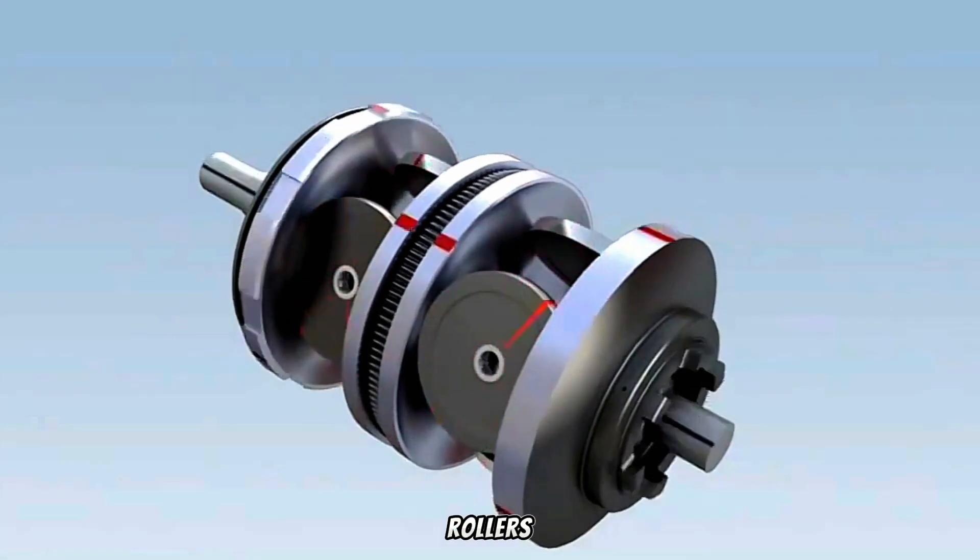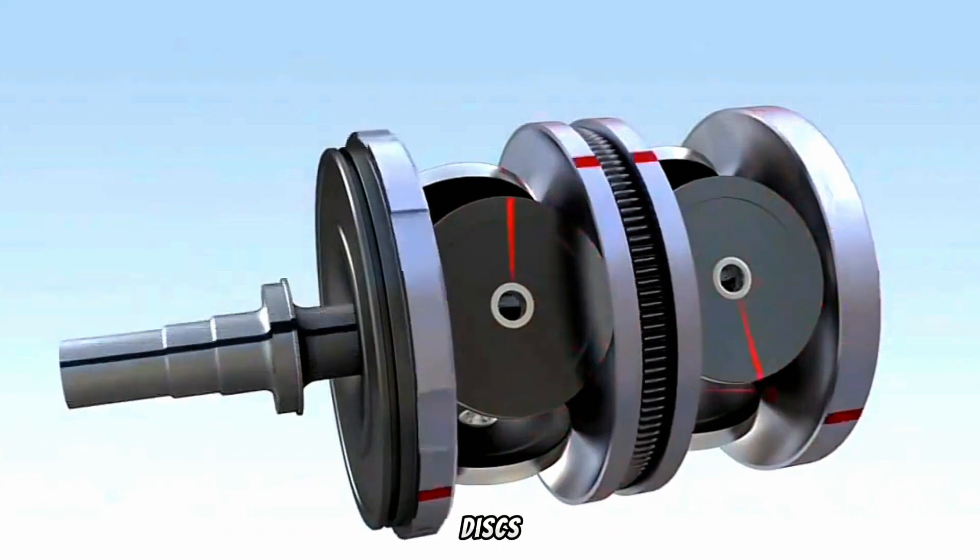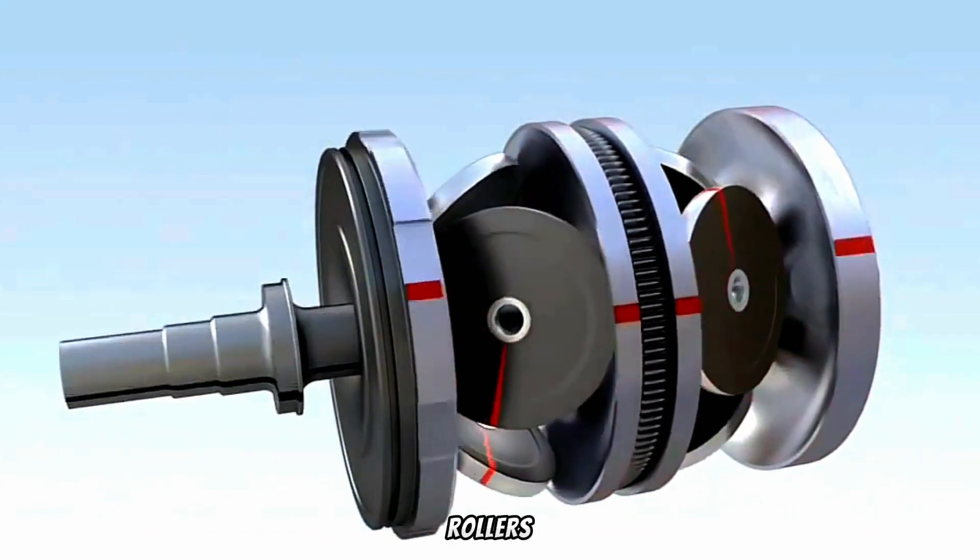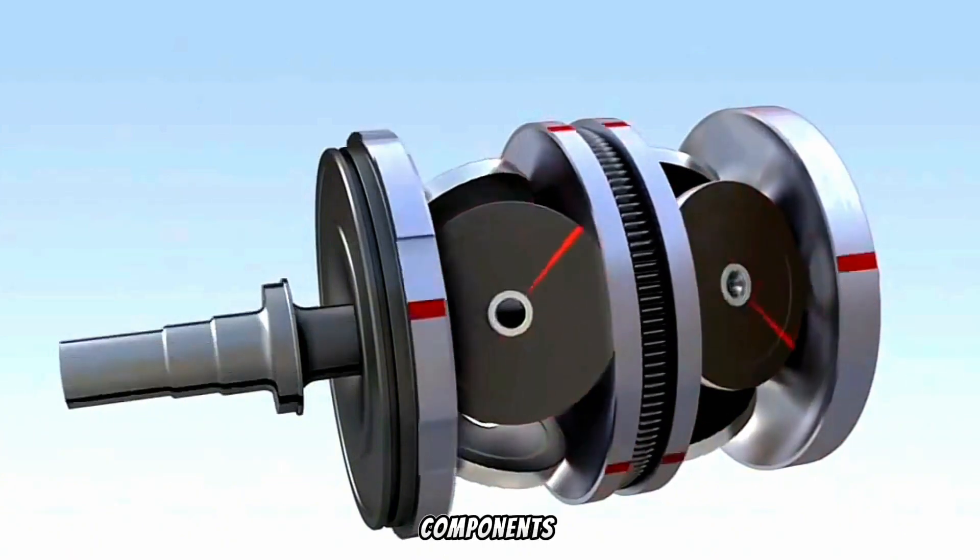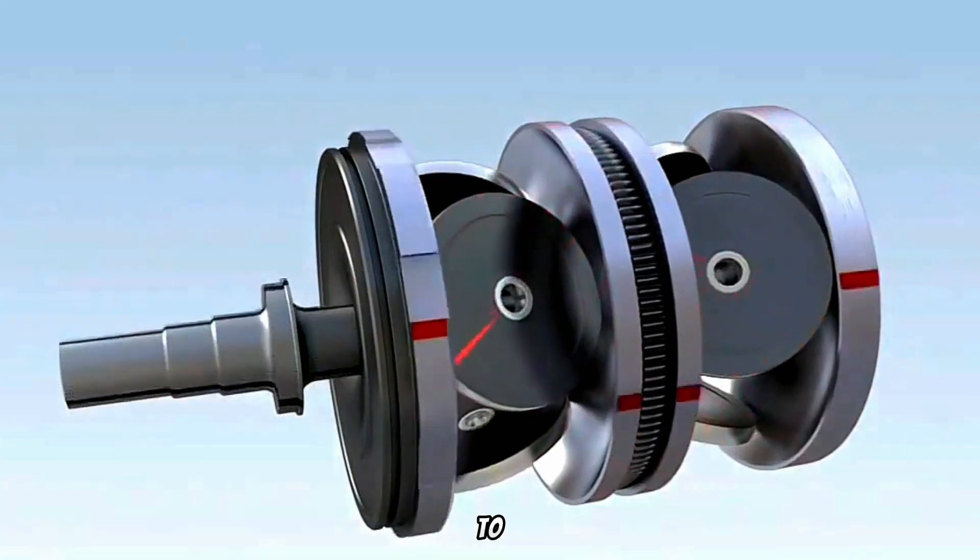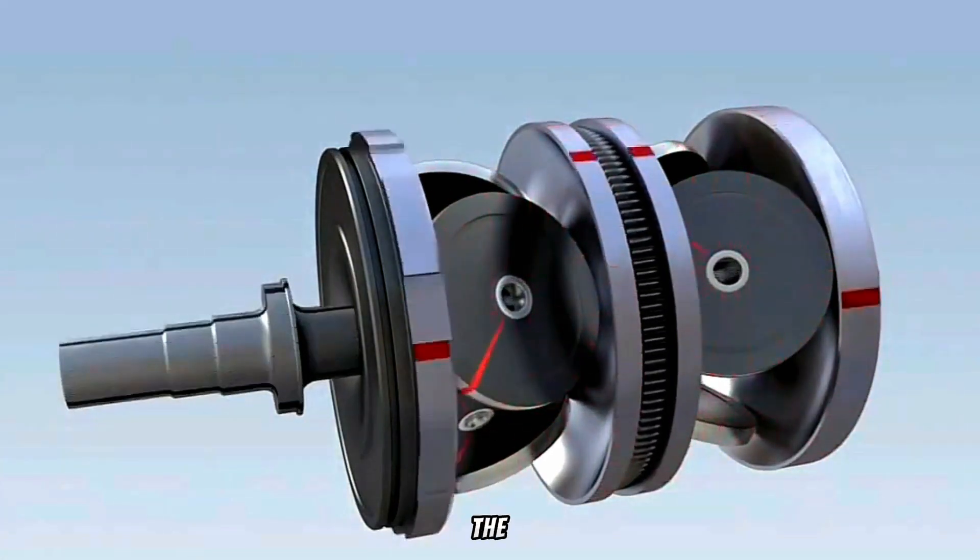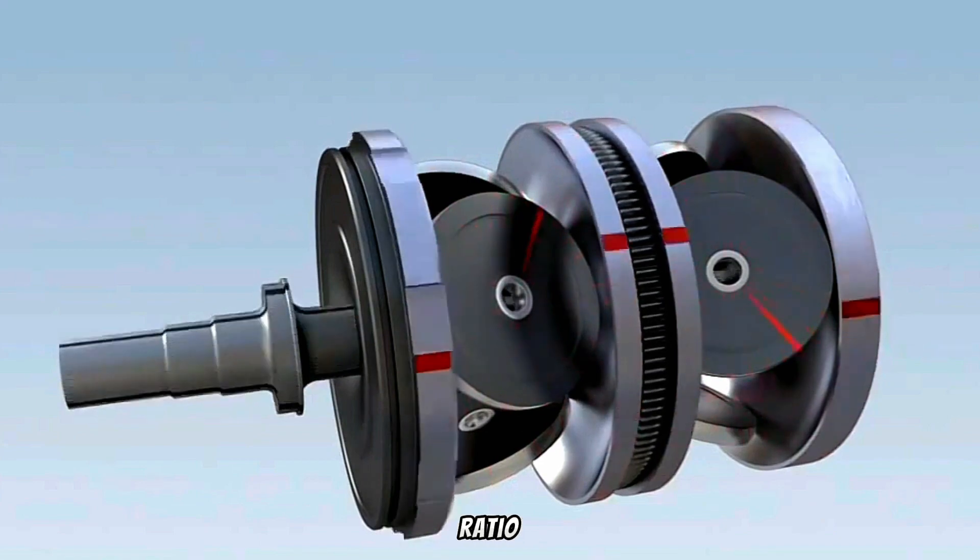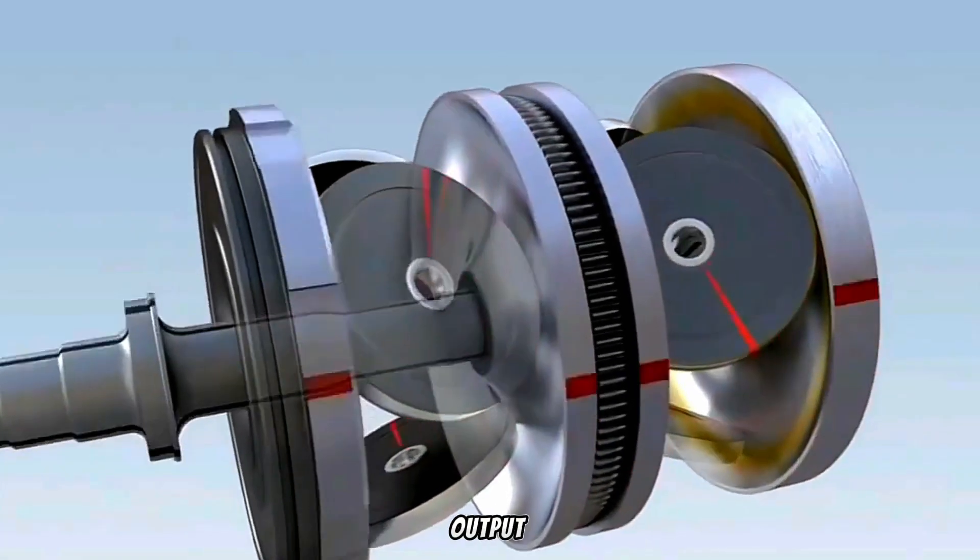The rollers are positioned in the toroidal cavities formed between each pair of opposing discs. In this case, there are three rollers in each cavity. As the variator components rotate, power is transmitted from the input discs to the output disc via the rollers. The angle of the rollers changes with the variator ratio and relates to the speed difference between the input and output discs.